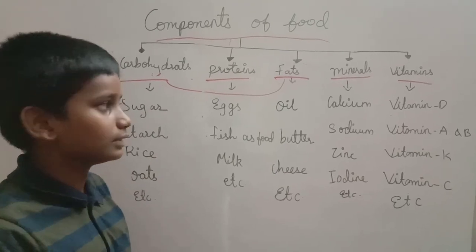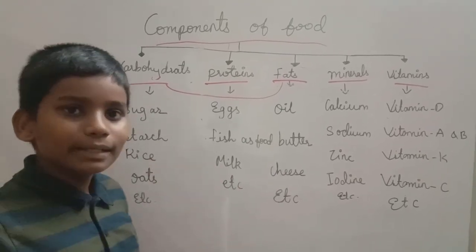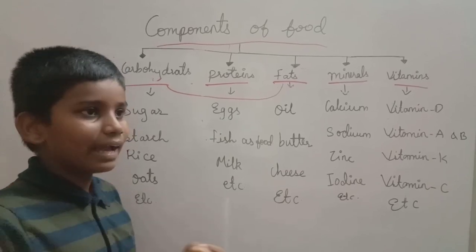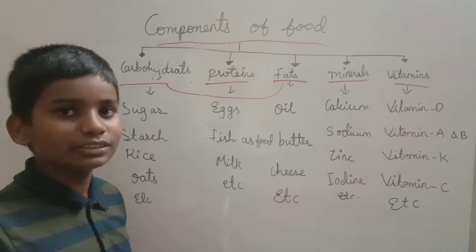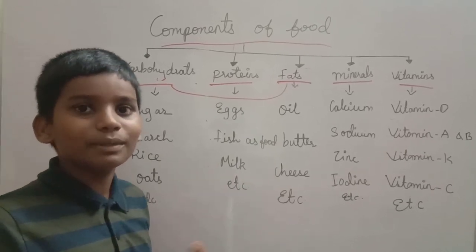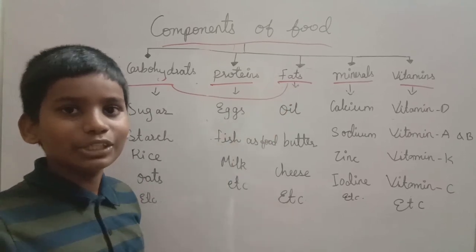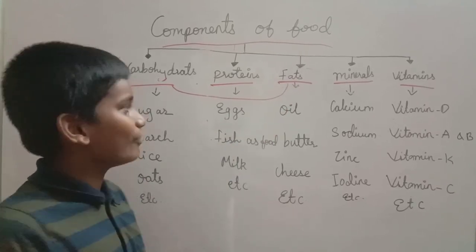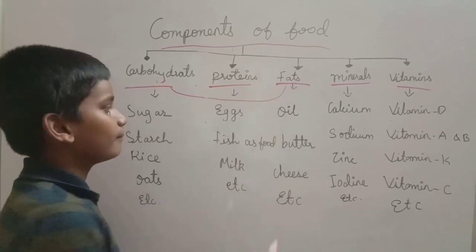Next, fats. The importance of fats is also similar to carbohydrates — it also gives us energy. But if you eat more fats, you will become fat. And if you don't eat fats at all, you will also become thin. So maintain minimum fats in your diet. Sources of fats are oil, butter, cheese, etc.